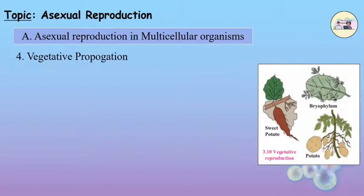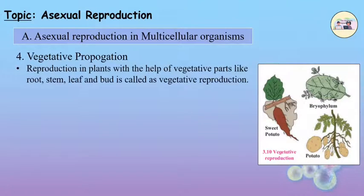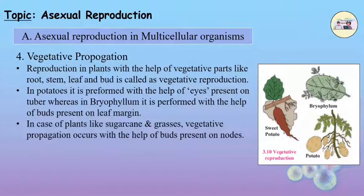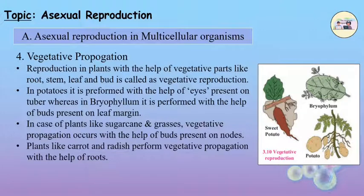Vegetative Propagation. Reproduction in plants with the help of vegetative parts like root, stem, leaf, and bud is called vegetative reproduction. In potatoes, it is performed with the help of eyes present on the tuber, whereas in Bryophyllum it is performed with the help of buds present on the leaf margin. In plants like sugarcane and grasses, vegetative propagation occurs with the help of buds present on nodes. Plants like carrot and radish perform vegetative propagation with the help of roots.